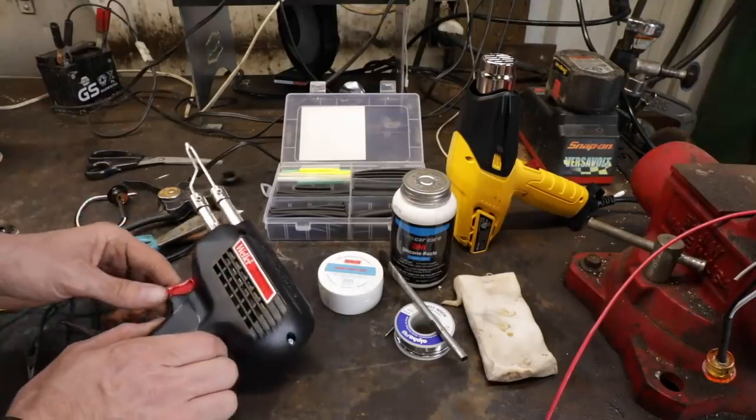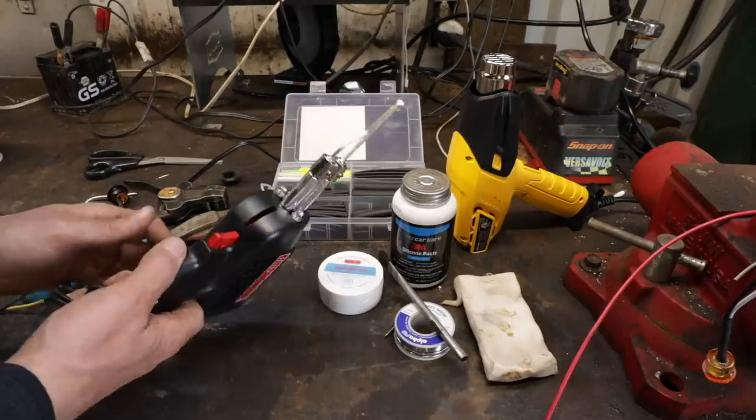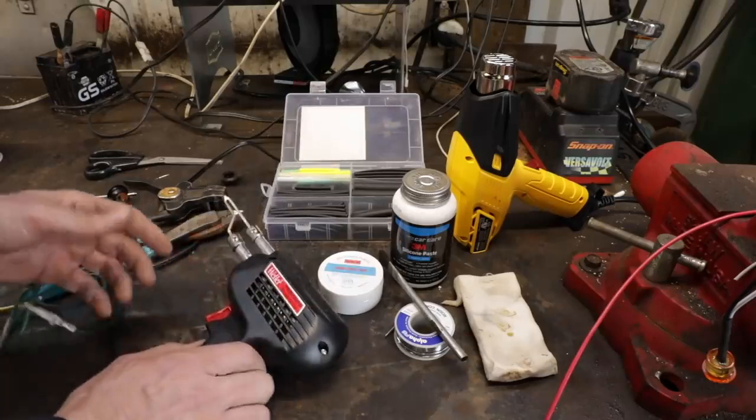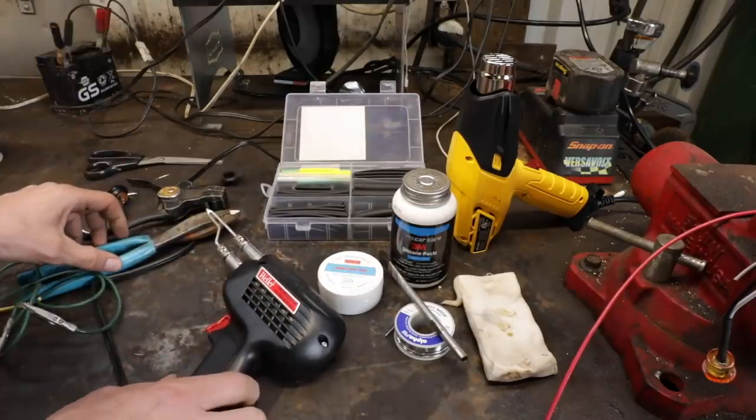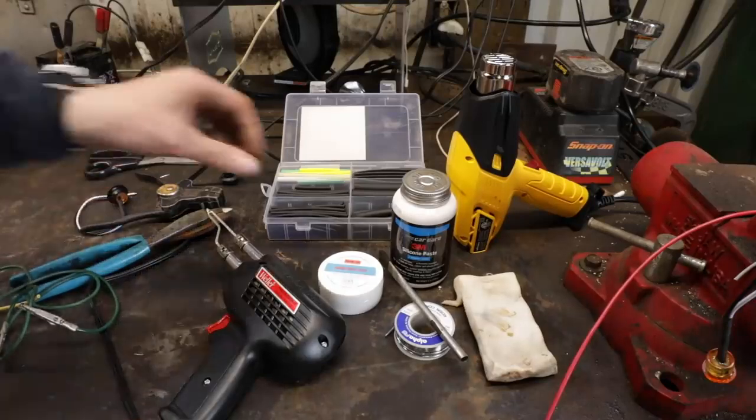Just get yourself a soldering gun. You don't have to get anything fancy. These Wellers are good. They're probably in the $30 to $40 range. Not very much.